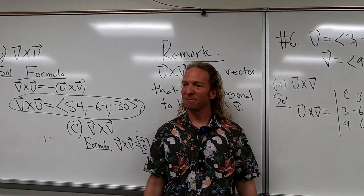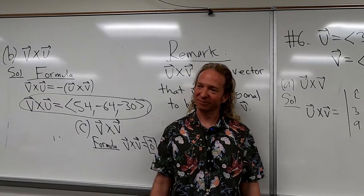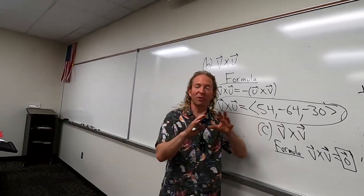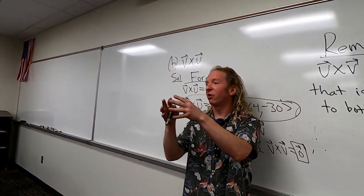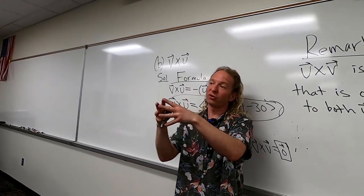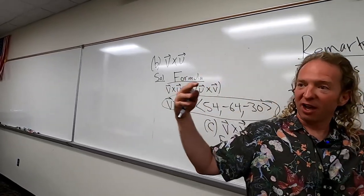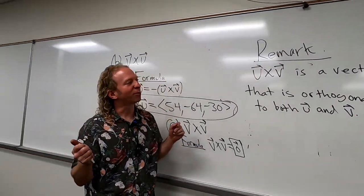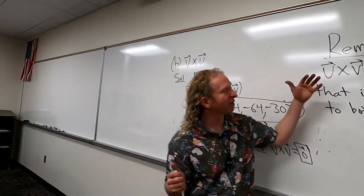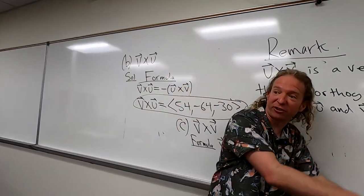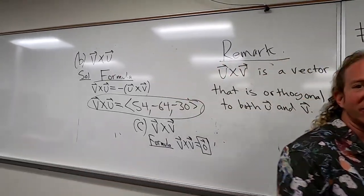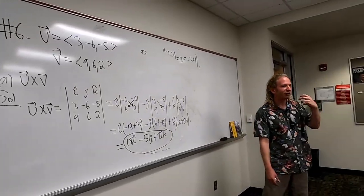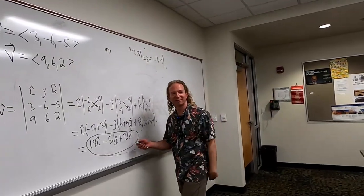What's the difference between cross product and dot product? The dot product takes two vectors and gives you a number — for our purposes, used to determine if things are perpendicular: if the result is zero, they're orthogonal. The cross product takes two vectors and gives you a vector that is actually perpendicular. So dot product gives a number; cross product gives a vector.